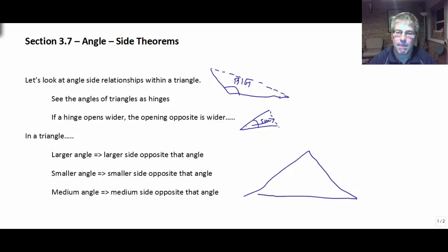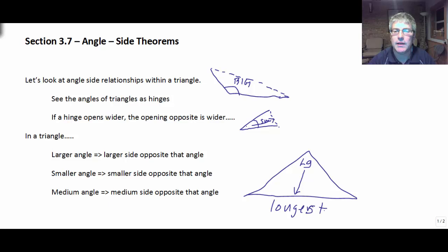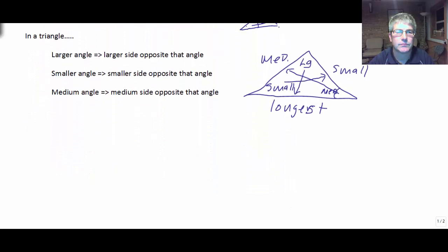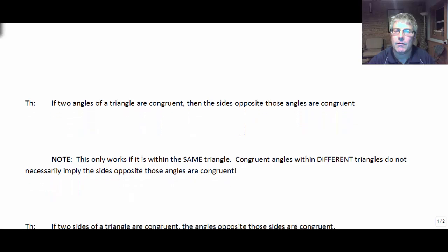If we draw any triangle and we have a large angle — large relative to the other angles — we're going to have a longer opposite side. In fact, the largest angle will have the largest opposite side. The smallest angle will have the smallest opposite side, and a medium angle will have a medium opposite side. The converse is also true: the smallest side corresponds to the smallest angle, and so forth.